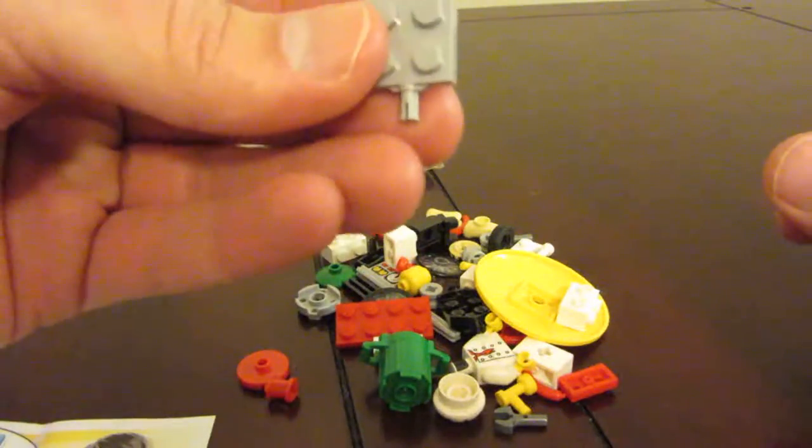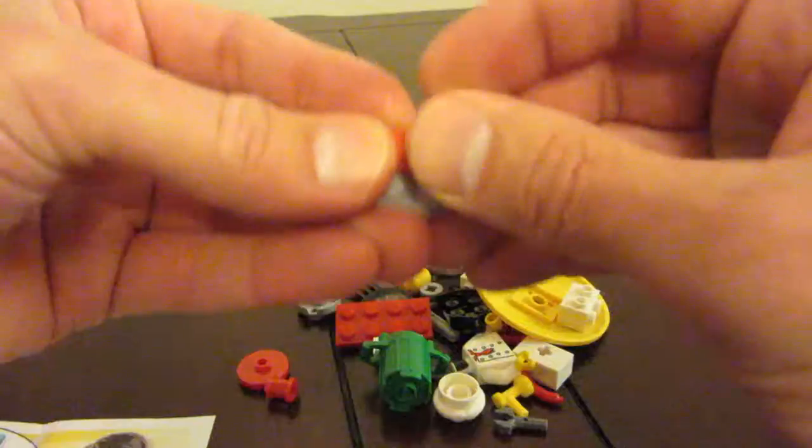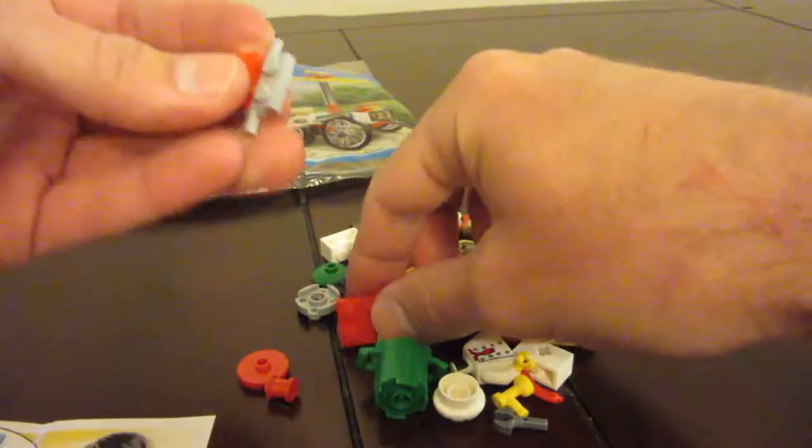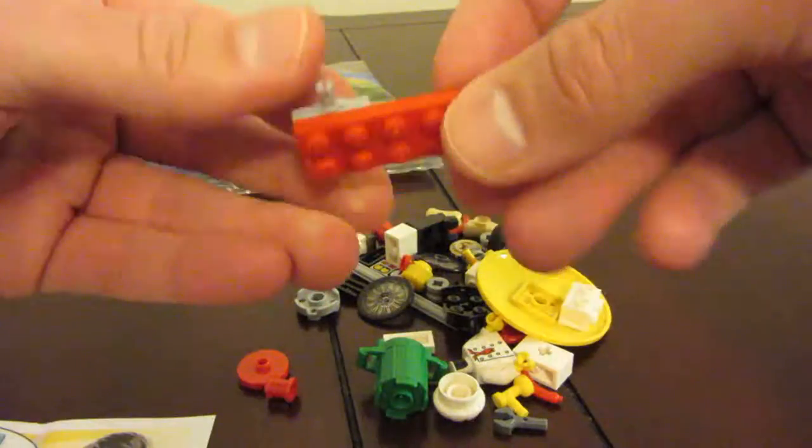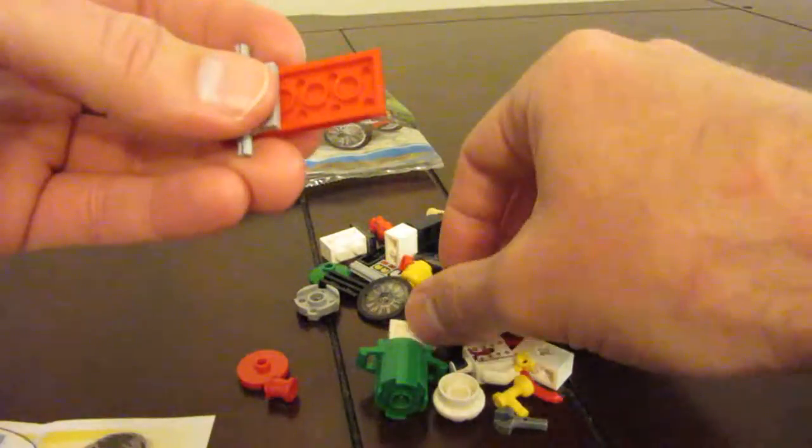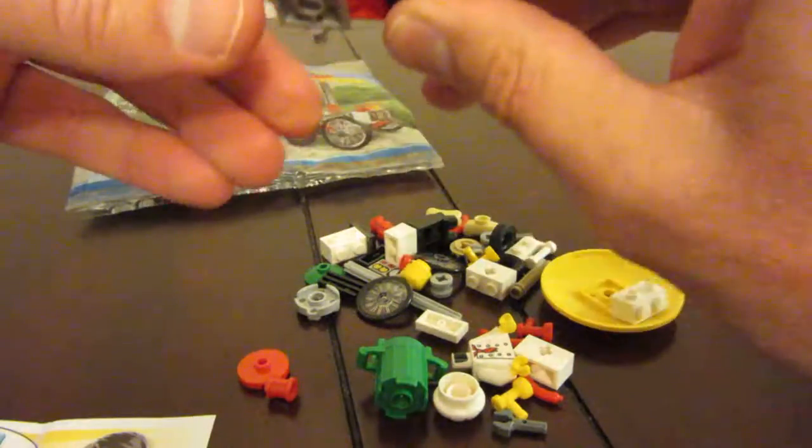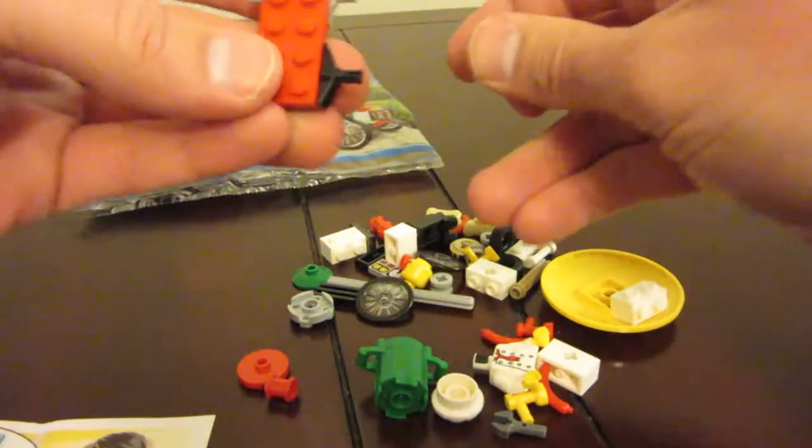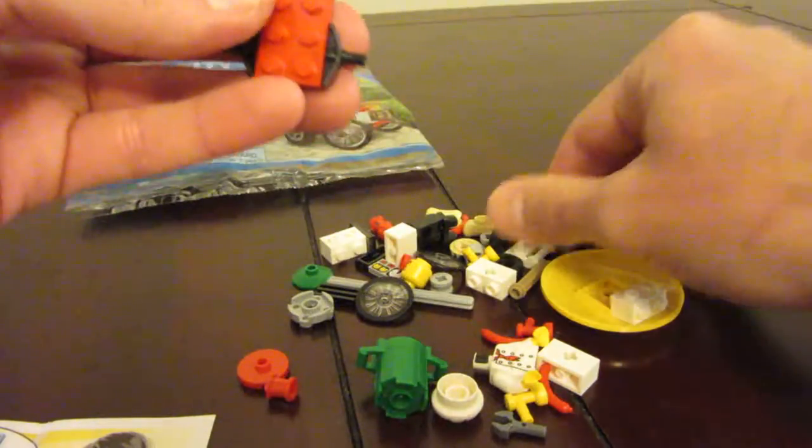So we start with this little gray piece here. Put on a red two-piece, two-by-one, and we get a two-by-four red piece. Flip it over.